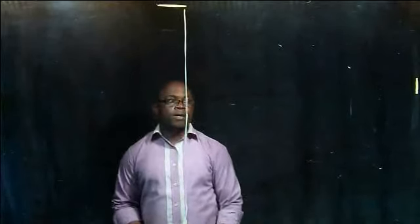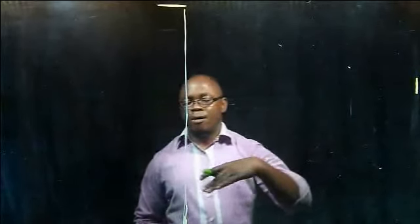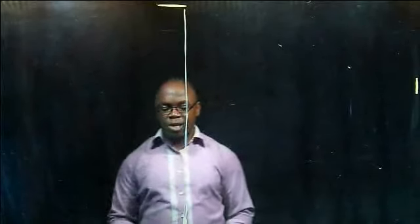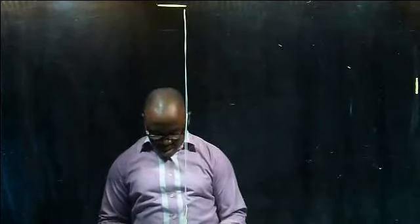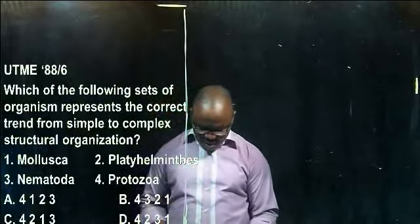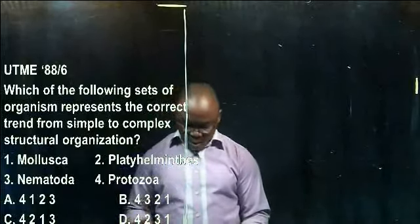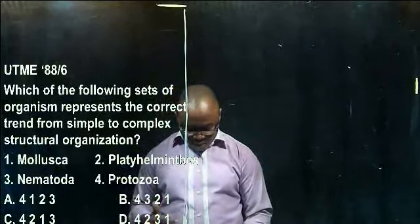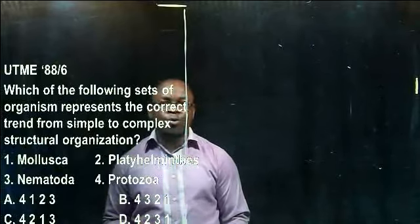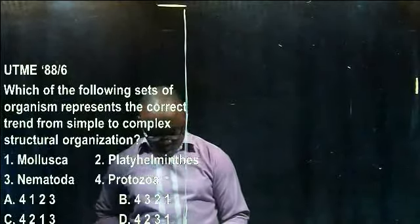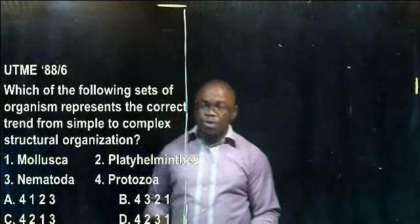Hello, you're welcome back to our series 10 on our lectures on varieties of living organisms. We've had nine series of lectures so far, and this is our 10th series. Without wasting much time, we'll go to our first question for this series. The question was extracted from JAMB 1988, number 6. It reads: which of the following sets of organisms represents the correct trend from simple to complex structural organization?